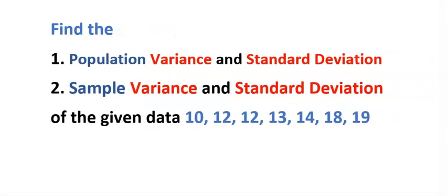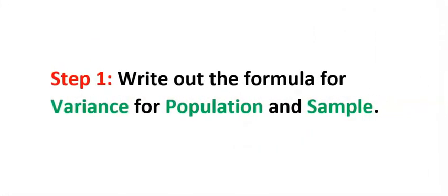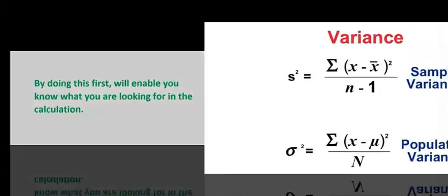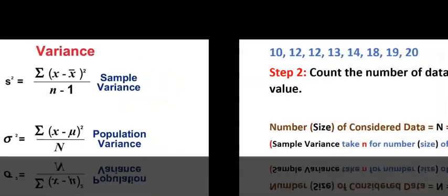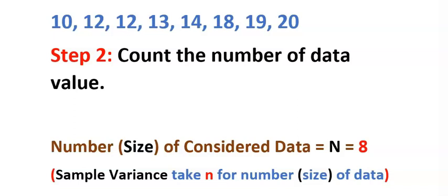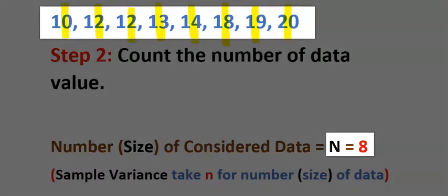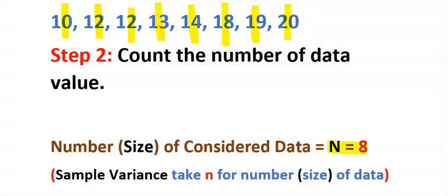Now let's consider step by step how to solve this problem. Step one: write out the formula for variance — for population and for sample. Doing this first will enable you to know what you're looking for in the calculation. Step two: count the number of data values. Here we get one, two, three, four, five, six, seven, eight — so n equals eight.